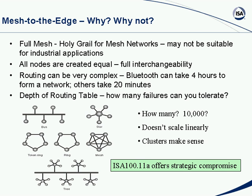Routing can get very complex. The classic story is that in a meeting with about 30 people with Bluetooth-enabled laptops, they took four hours and still didn't get a network formed — all the batteries were dead before the network formed. Other industrial networks can take 20 minutes to form. A classic question to ask anybody talking about an industrial wireless mesh network is: how long does it take for the network to form? You'll get answers from a few minutes to several hours — it's a hard question to answer and takes good simulators to do it.